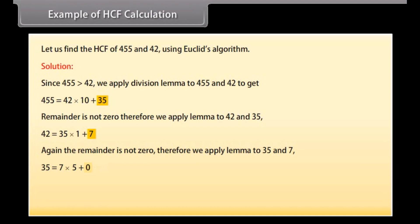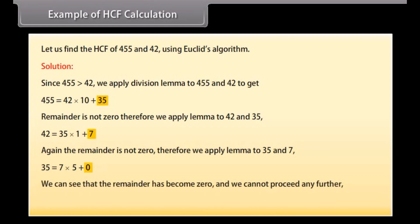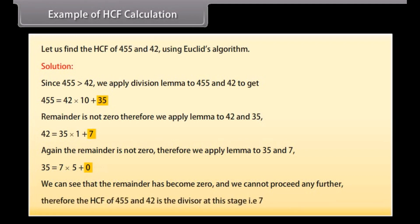The remainder has become 0 and we cannot proceed any further. Therefore the HCF of 455 and 42 is the divisor at this stage, which is 7.